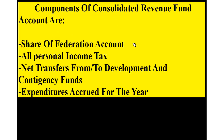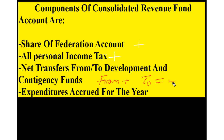To be clear on the signs: share of federation account is plus; all personal income tax items are plus because these are income of the federal government; net transfer 'from' is plus, net transfer 'to' is minus; then deduct expenditures accrued for the year. When you finish this, you have finished preparing your consolidated revenue fund account. There's not too much to it — it is a very simple process.